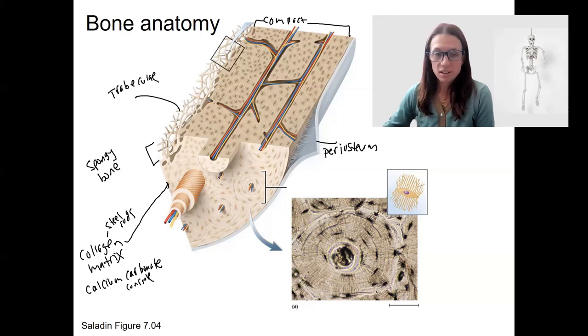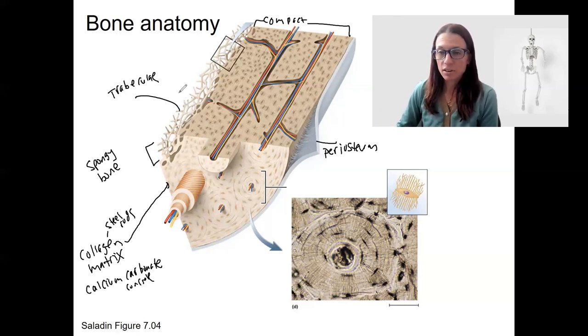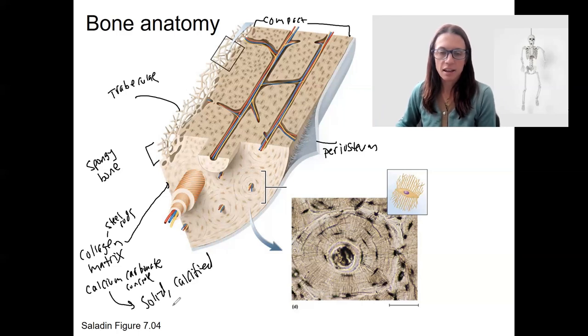So the matrix, the extracellular matrix of bone is calcified. So that ends up being a solid calcified extracellular matrix. Bone also contains blood vessels, which is different than cartilage. These blood vessels are located in the central canal going through the compact bone. This is a central canal of a single osteon.